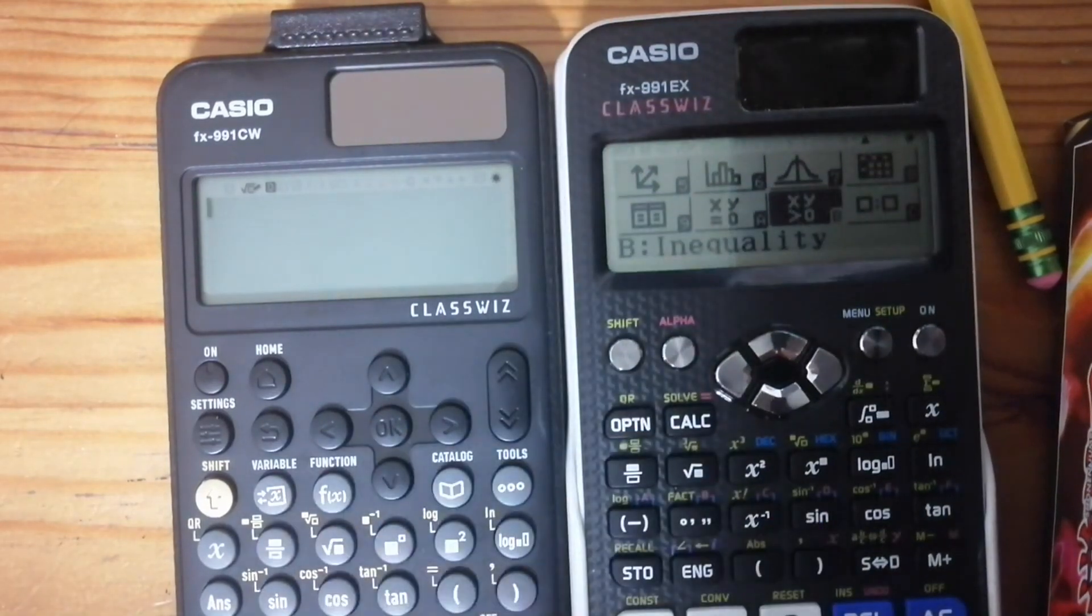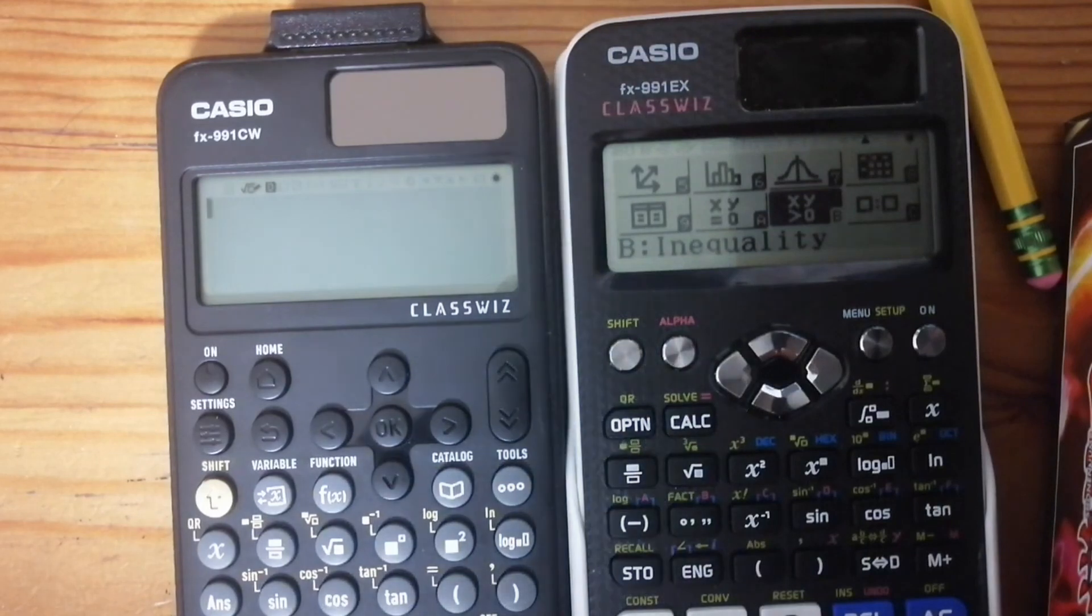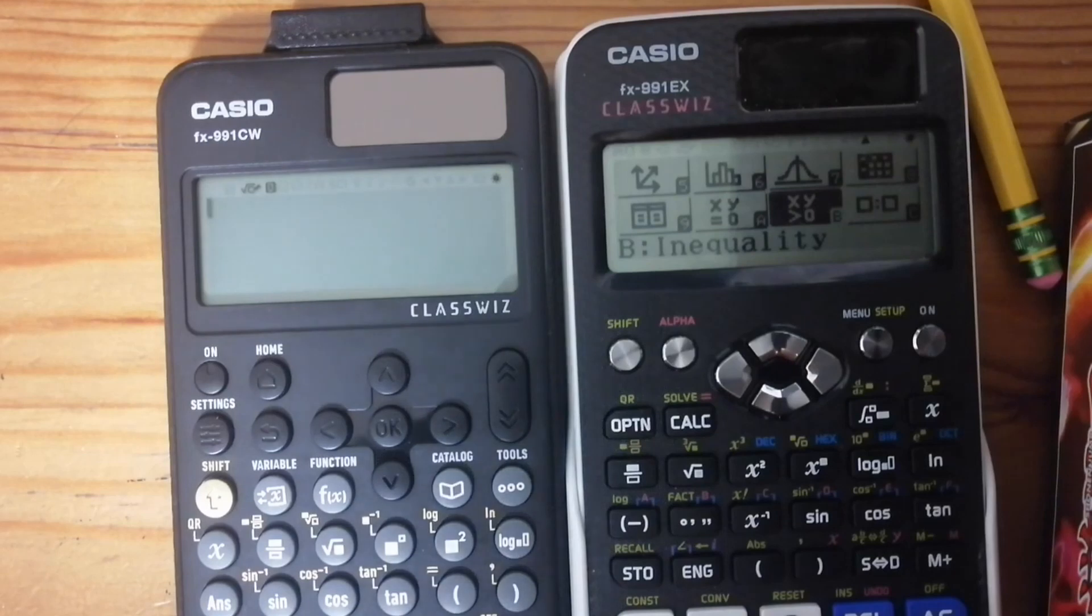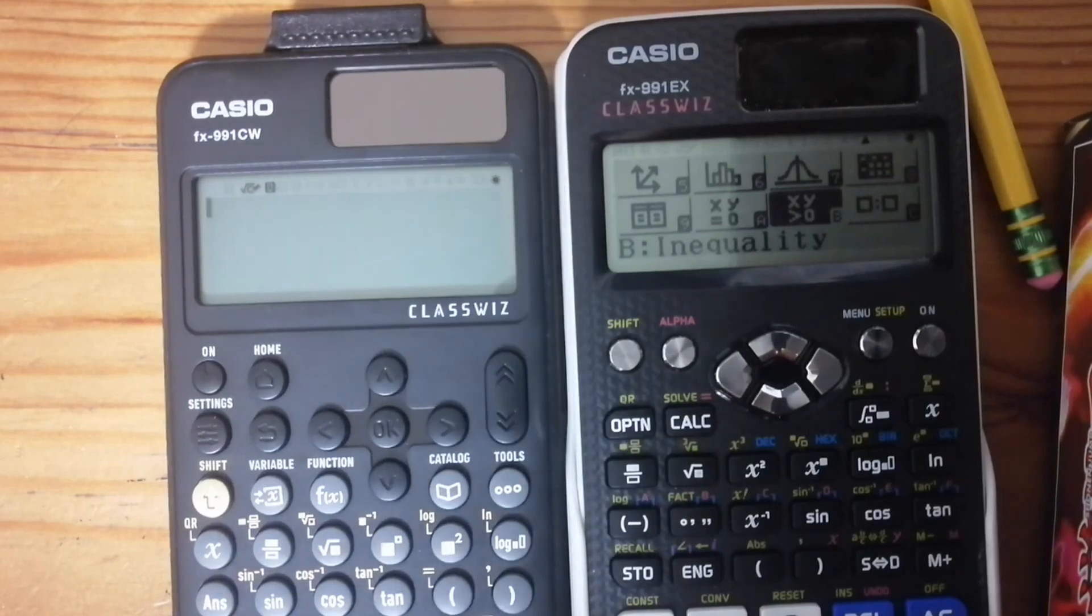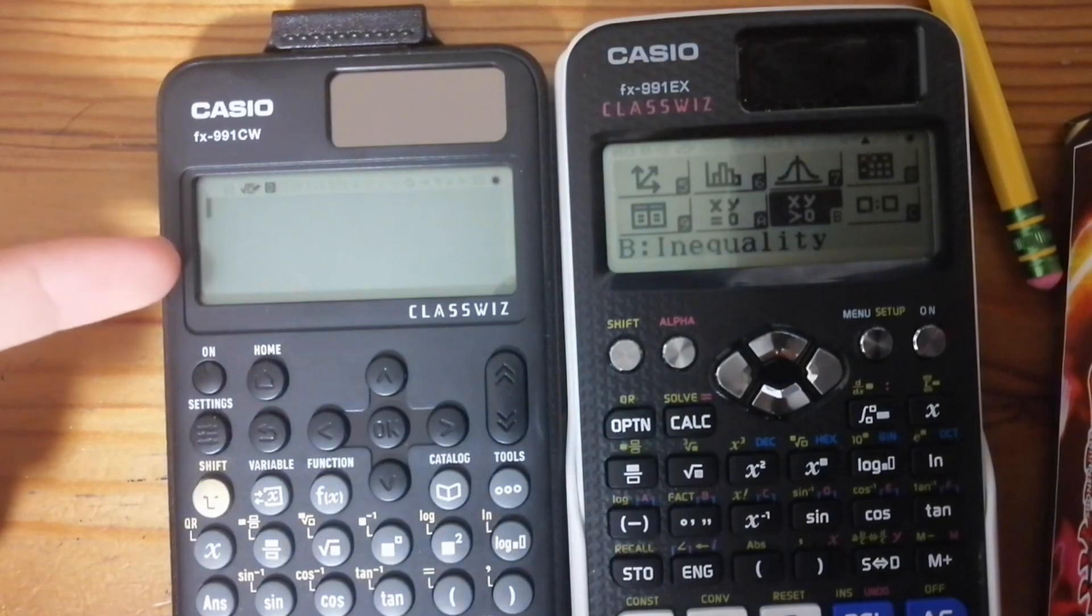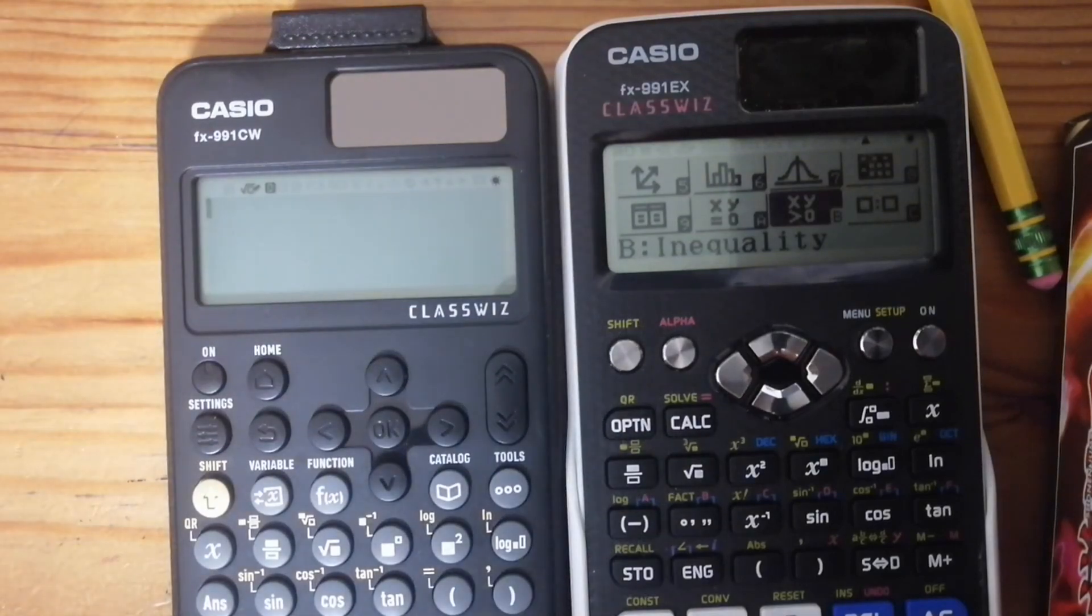The EX still has a lot of features. That's still a very useful calculator, but the CW does have a bit more. So in the next few days, I'll probably post a few videos utilizing the new features on the CW. So overall, the CW is pretty similar to the EX. If you already have an EX, I wouldn't recommend going out of your way to get a CW. But if you're looking for a new calculator, you might as well just get the CW anyways. It's either the same price or not that much more expensive. I bought this one on Amazon for $30 Canadian.